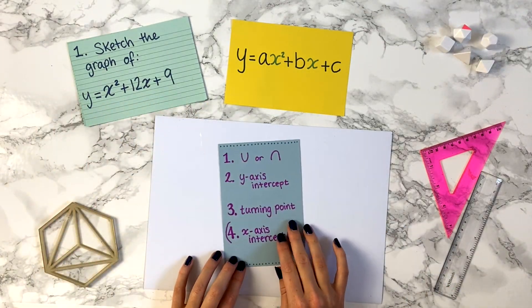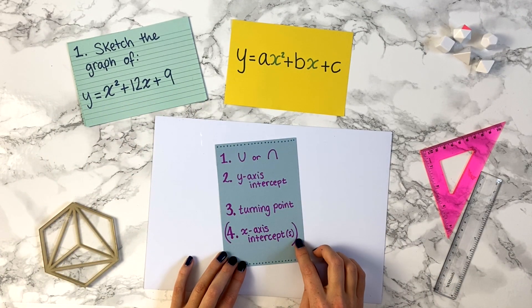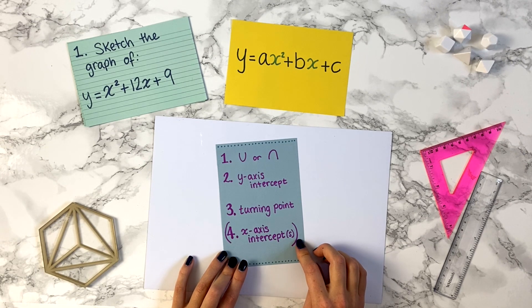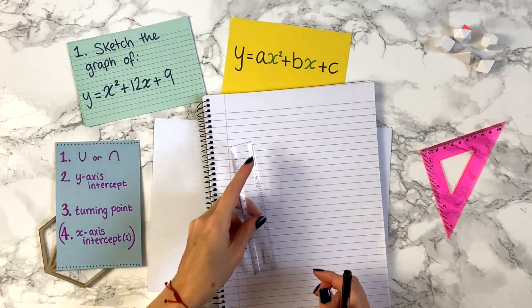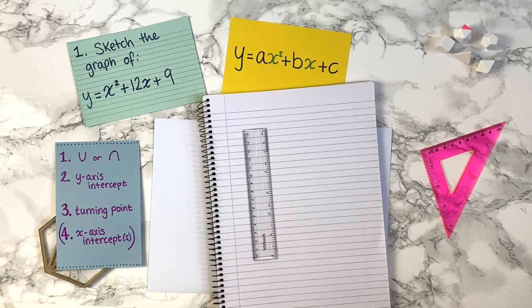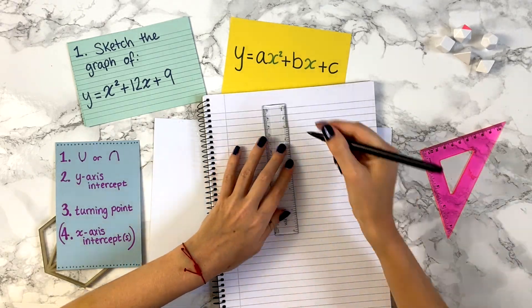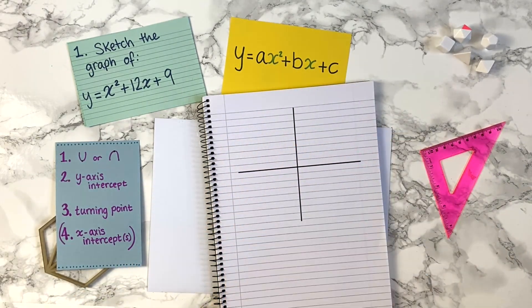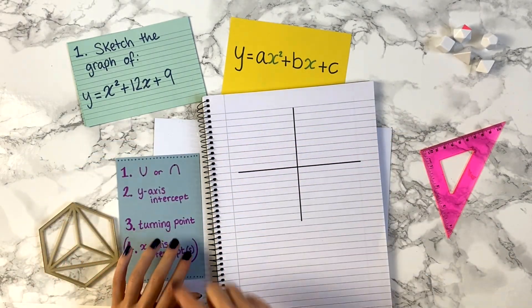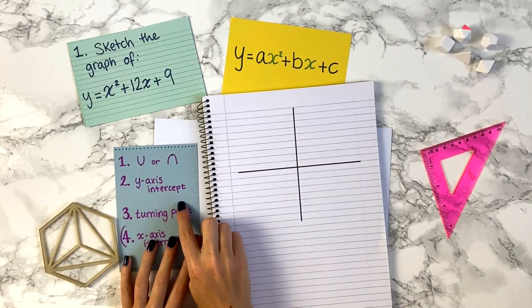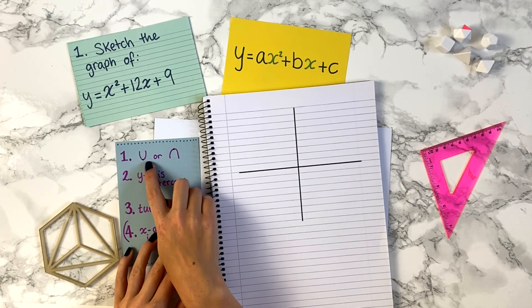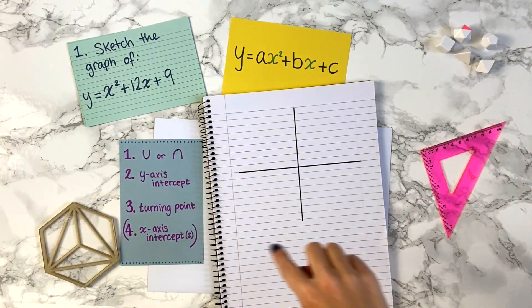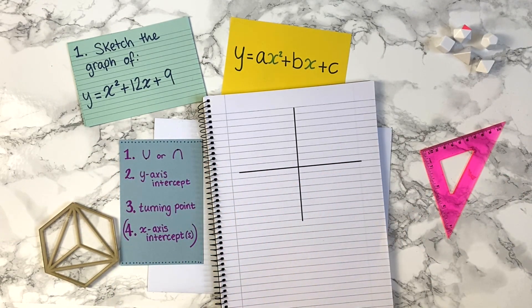There are three, and sometimes four, key pieces of information to help us sketch a quadratic graph. Let's start by drawing a set of axes. The first two pieces of information are quite straightforward to find. The first one is whether the graph is U-shaped or upside-down U-shaped.